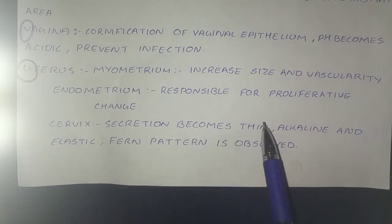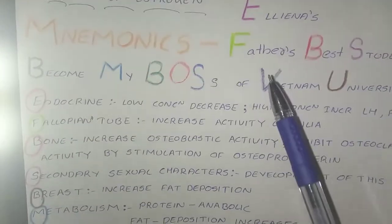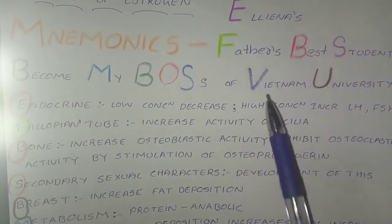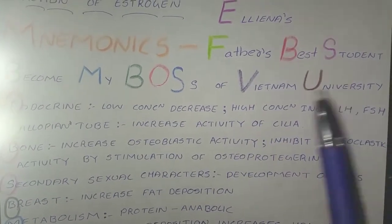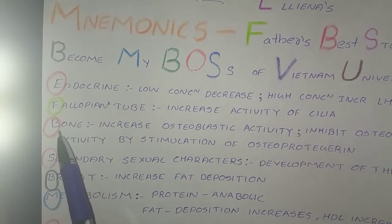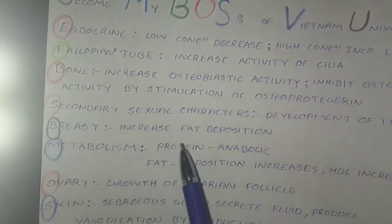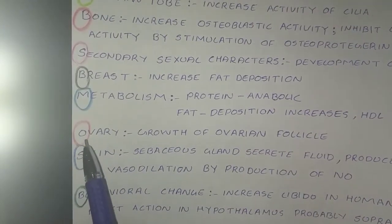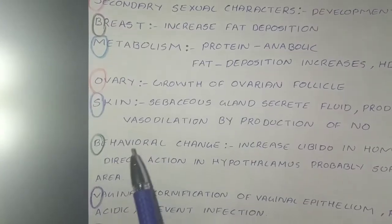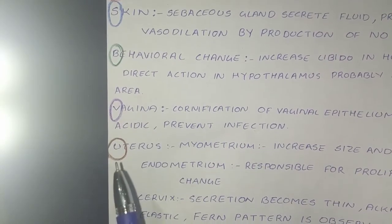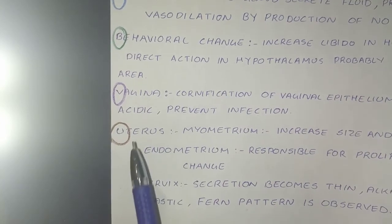That's all for the functions of estrogen. To recap the mnemonic 'Elena's father's best student become my boss of Vietnam University': E = endocrine, F = fallopian tube, B = bone, S = secondary sexual characters, B = breast, M = metabolism, O = ovary, S = skin, B = behavioral changes, V = vagina, U = uterus.